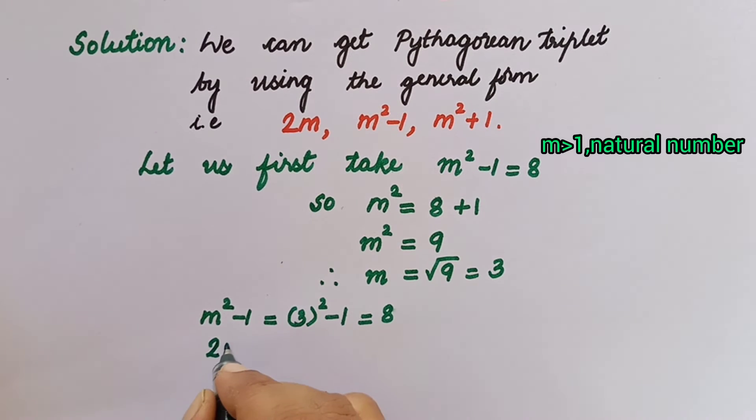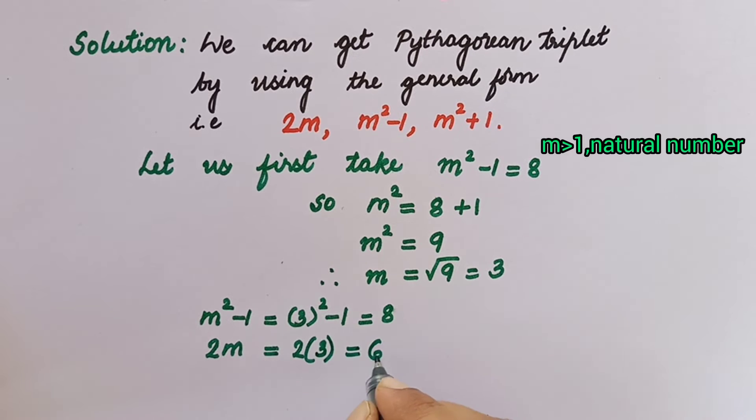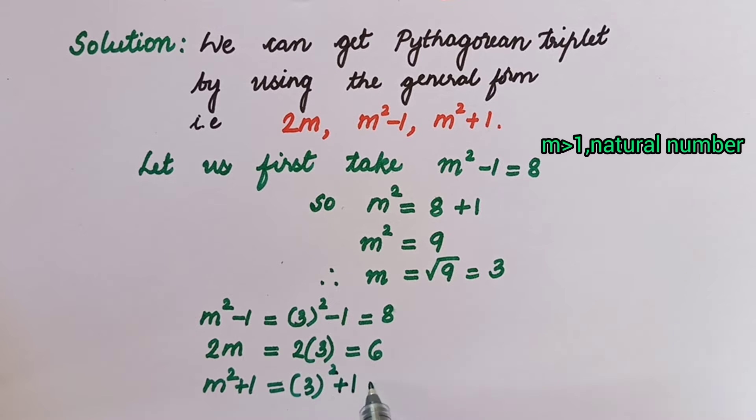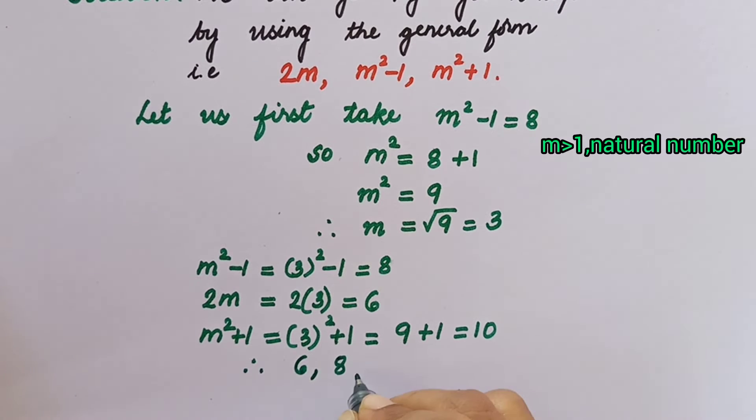Now we'll take 2m, substituting the value m equals 3 we get 6. Now m square plus 1, substituting the value 3 we get 9 plus 1 which is equal to 10. Therefore, the Pythagorean triplet here is 6, 8, 10.